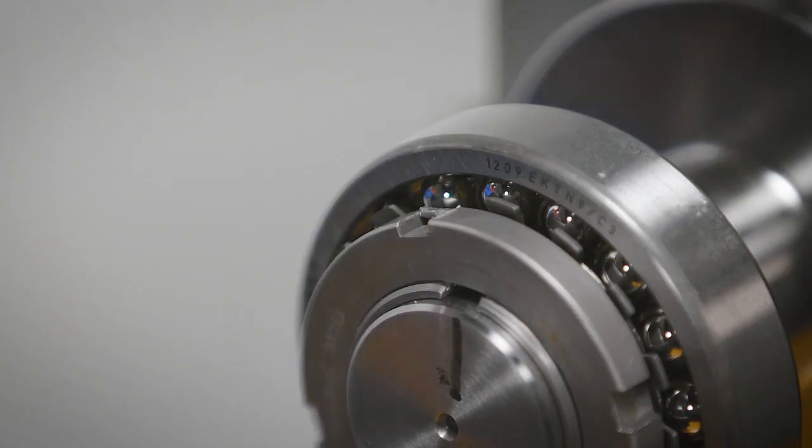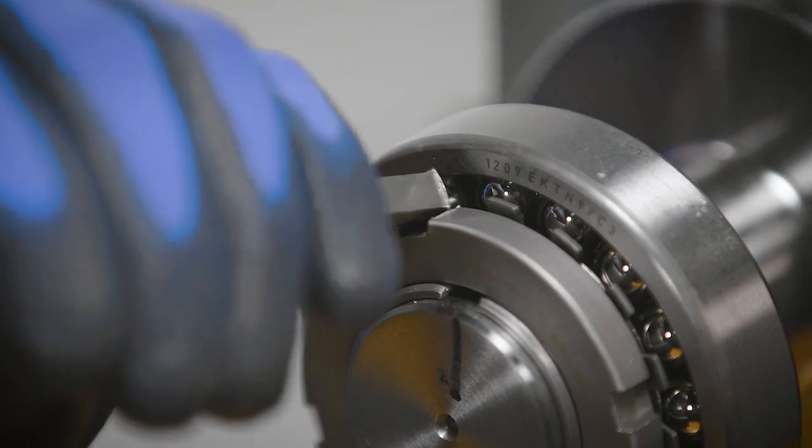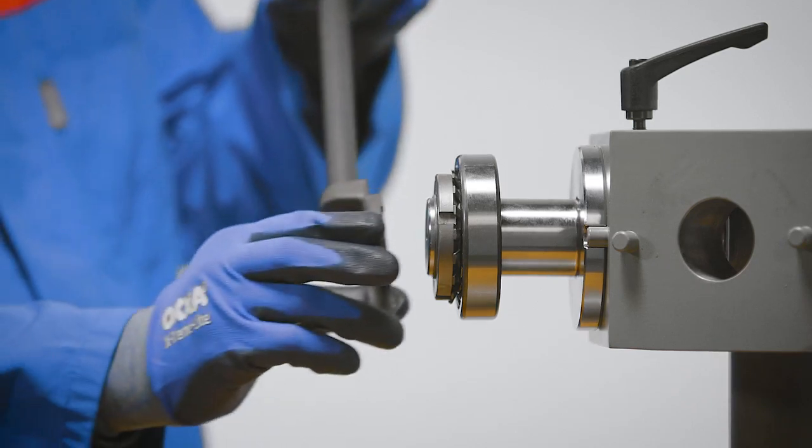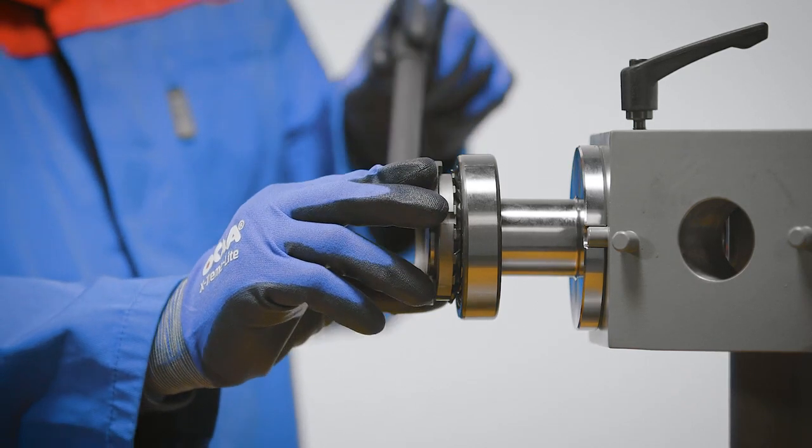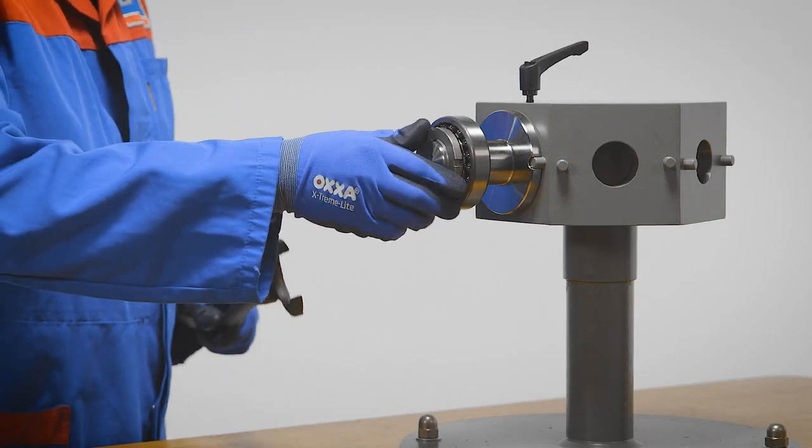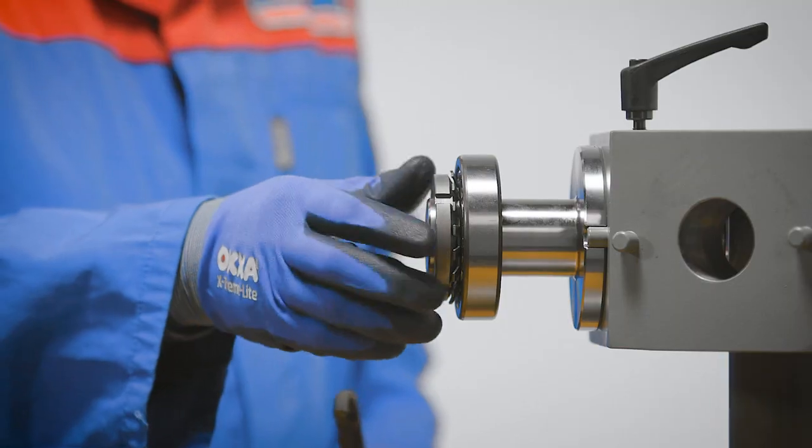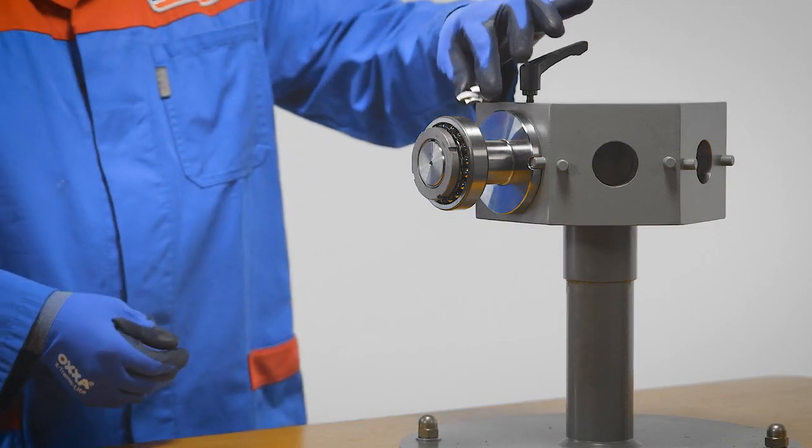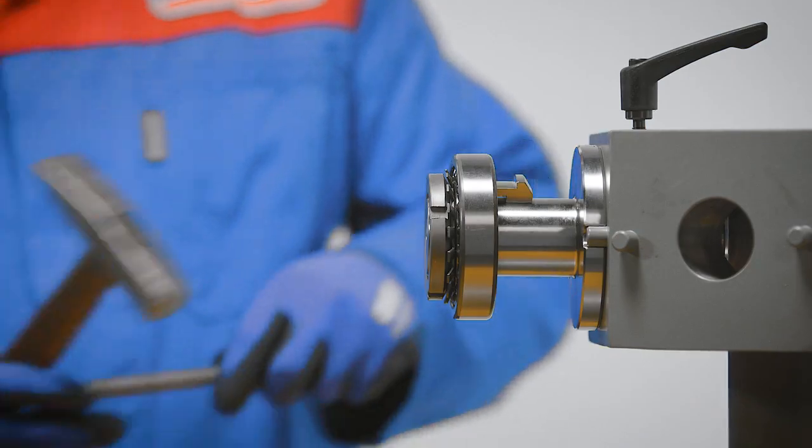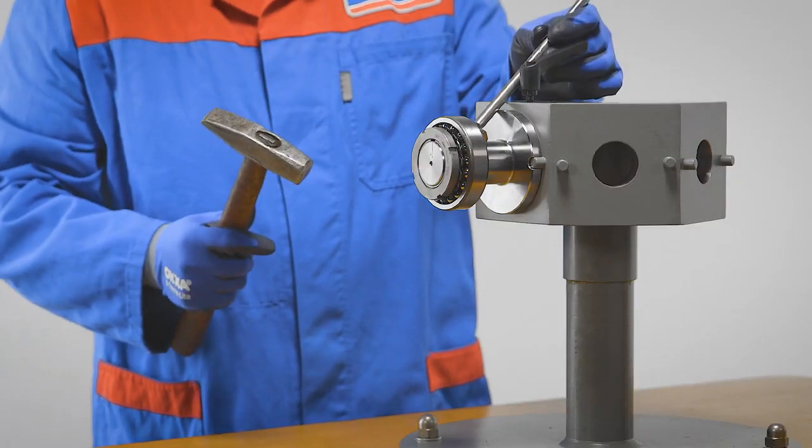To dismount the self-aligning ball bearing, start by unbending the tab of the lock washer and back off the lock nut with a turn. Place a suitable steel segment behind the bearing and with some sharp hammer blows, the bearing will be driven off the tapered sleeve, releasing it from the shaft.